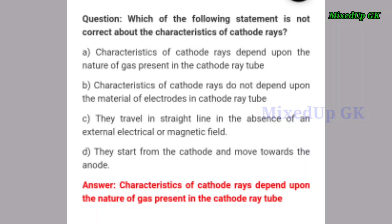Next question: which of the following statements is not correct about the characteristics of cathode rays? Option A: characteristics of cathode rays depend upon the nature of gas present in the cathode ray tube. Option B: characteristics do not depend upon the material of electrodes. Option C: they travel in a straight line in the absence of an external electrical or magnetic field. Option D: they start from the cathode and move towards the anode.